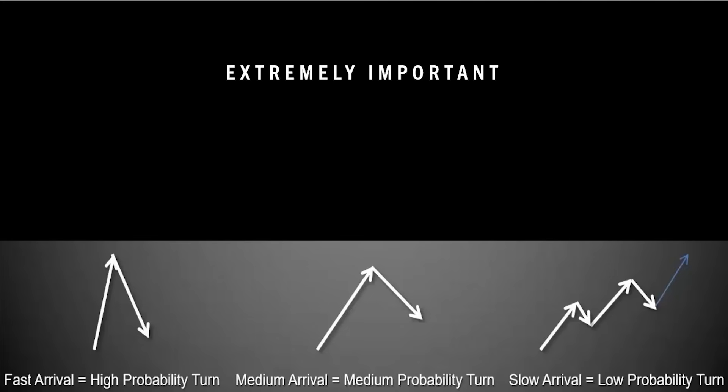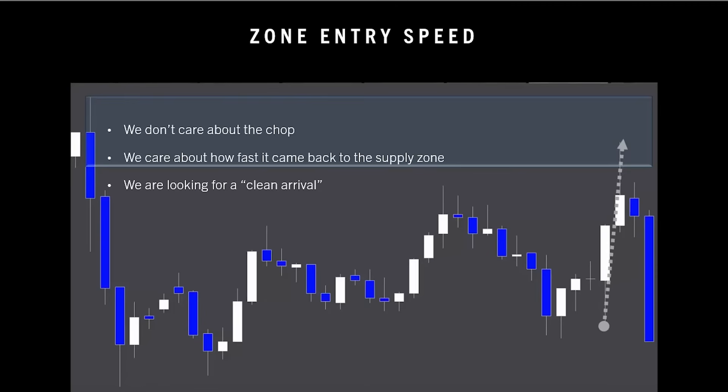This is very important: it is referring to the speed at which the price enters a supply zone. The faster the price jumps in there — even if it was consolidating in the middle for a while — the stronger the chance is that it will reverse out of the zone. See how fast it returned to the supply zone at those two candles? That's what's important. We don't care about all of the choppiness after it left supply and before it got to those two candles that went flying into the zone. What's important is how it eventually moved in — here, it did it really fast in just two candles, so it's good.